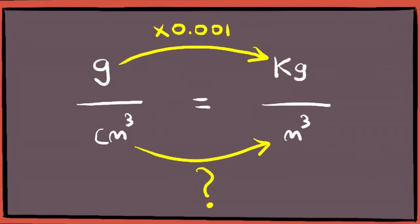Some go on to divide the denominator by 100 since 1 cm equals 0.01 meters, right? Unfortunately, it just doesn't work that way.